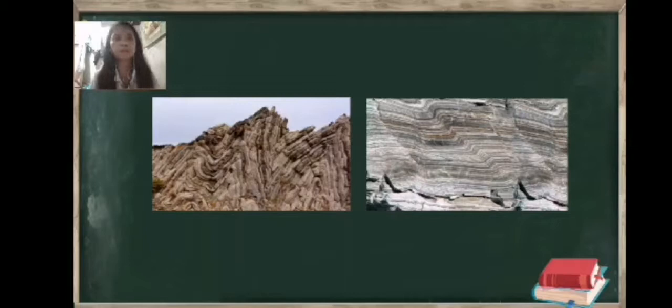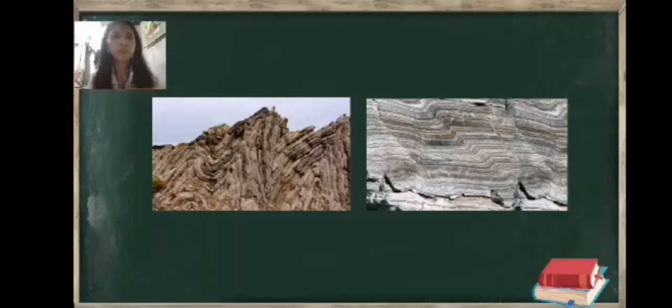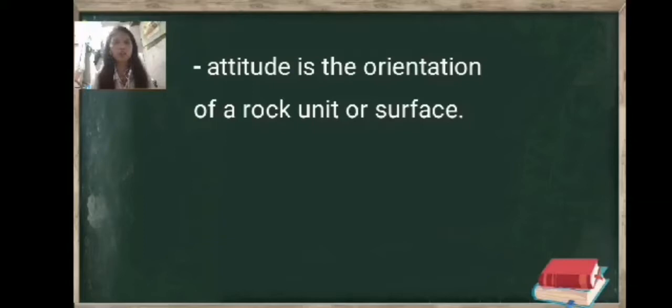These are the examples of structural geology. Now we will move to the sub-topics of structural geology, which is altitude of beds. Attitude of beds is called bedding attitude. It is defined as the strike and dip of a bed. Geologists often measure the strike and dip of a surface using a Brunton compass.